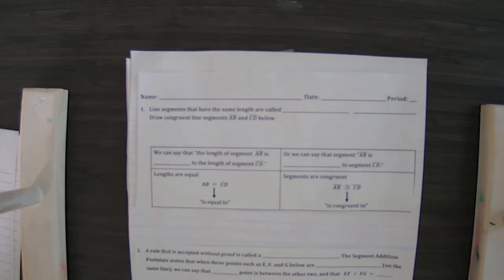Line segments that have the same length are called congruent segments. Now for some of this it may be a little bit difficult to read, I know it's kind of blurry. We're working on getting another method but for now I don't want you to get behind, so these are congruent segments.